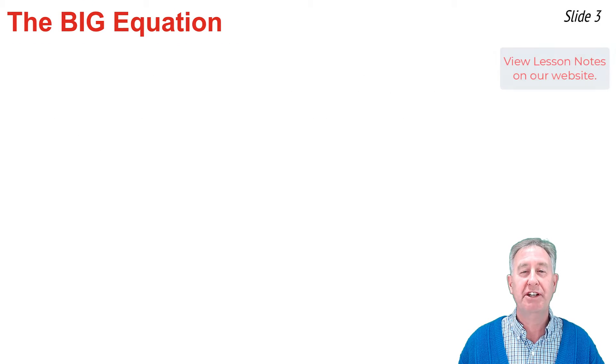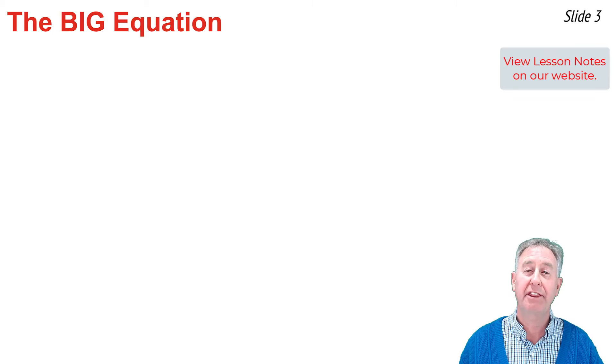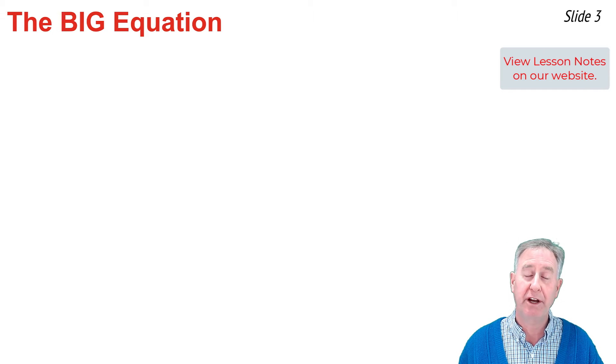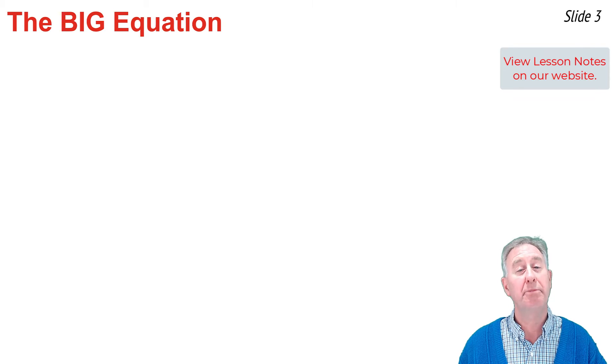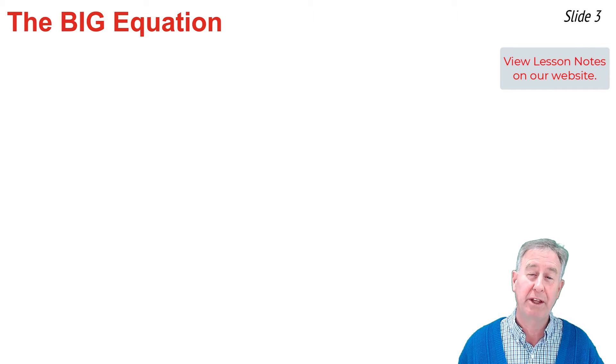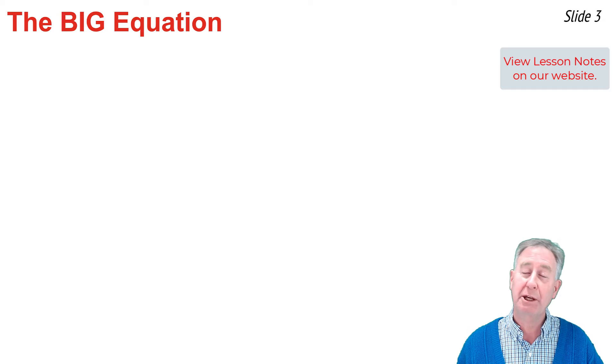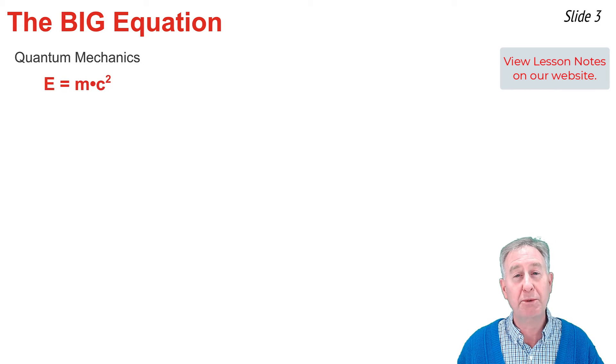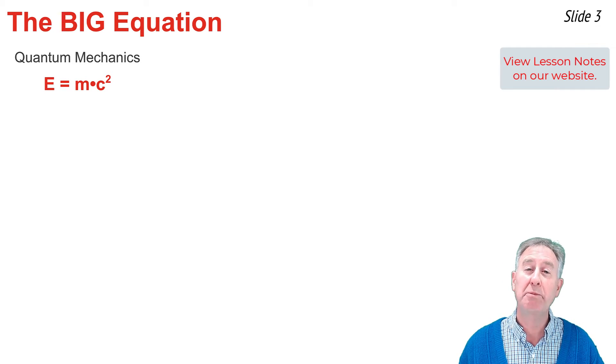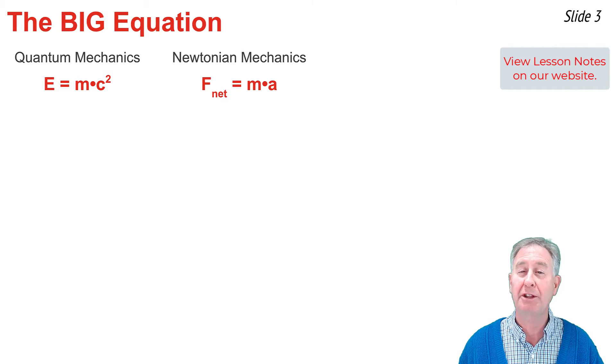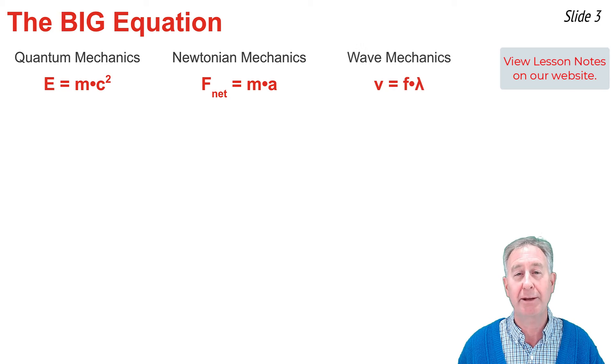There are equations in physics that are so powerful and so prevalent that they've actually reached the state of popular knowledge. The student of physics has written them down so many times that they've actually memorized them without even trying. In the world of quantum mechanics, that equation would be E equals mc squared. In the world of Newtonian mechanics, the equation would be F net equals ma. And in the world of wave mechanics, that equation would be v equals f times lambda.